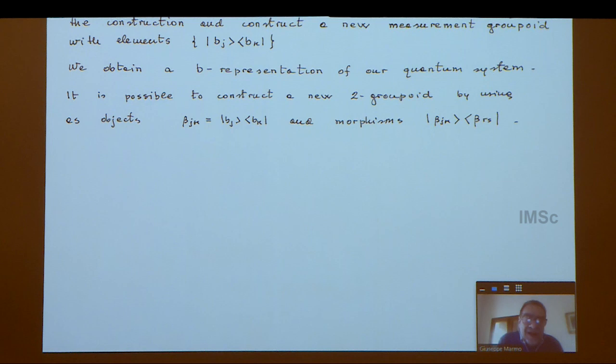Putting together the groupoids associated with different complete sets of compatible physical quantities is necessary to write the evolution. This essentially gives you a new groupoid. The previous groupoid essentially relies on a maximal set of commuting observables.